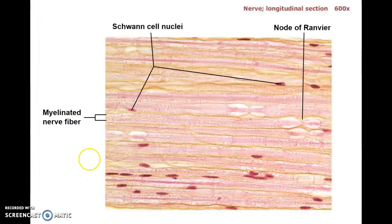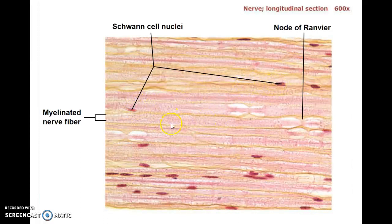This is another view of a bunch of axons cut longitudinally, at even higher power — 600x — with a different stain. You can see the Schwann cell nuclei and the axon running down the middle with the myelin around it. You can very nicely see a node of Ranvier where the myelin pinches in between two adjacent Schwann cells. Pretty nice view there.